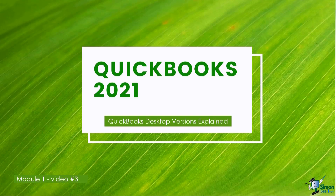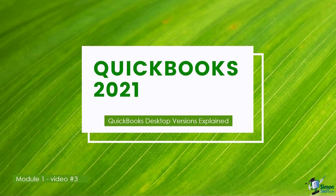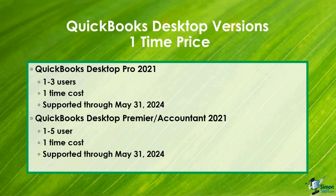A little bit of history: prior to version 2021, you could go to any local office supply store — Costco, Sam's, or online — and pay a one-time fee for the QuickBooks desktop software. Like all software, they're trying to make everything subscription based now. This year you can still get the actual software, or you can get what they call a Plus version of each, which is the subscription-based software. If you want to buy the actual desktop software, you can only buy it through Intuit's website now.